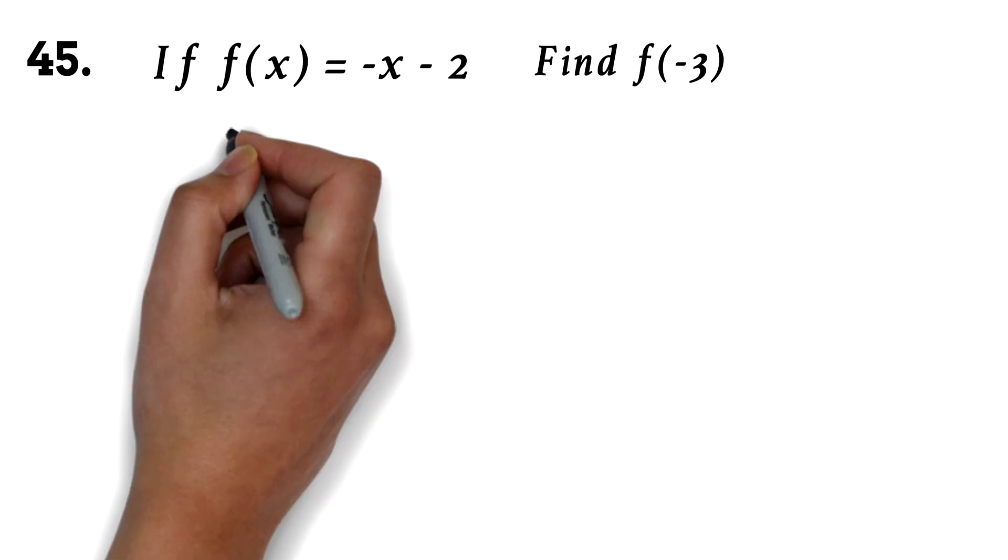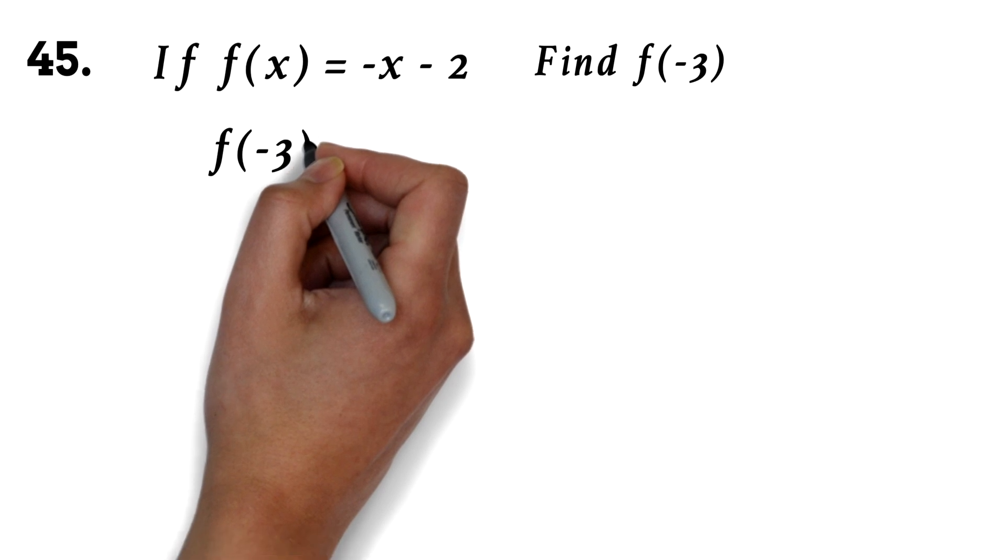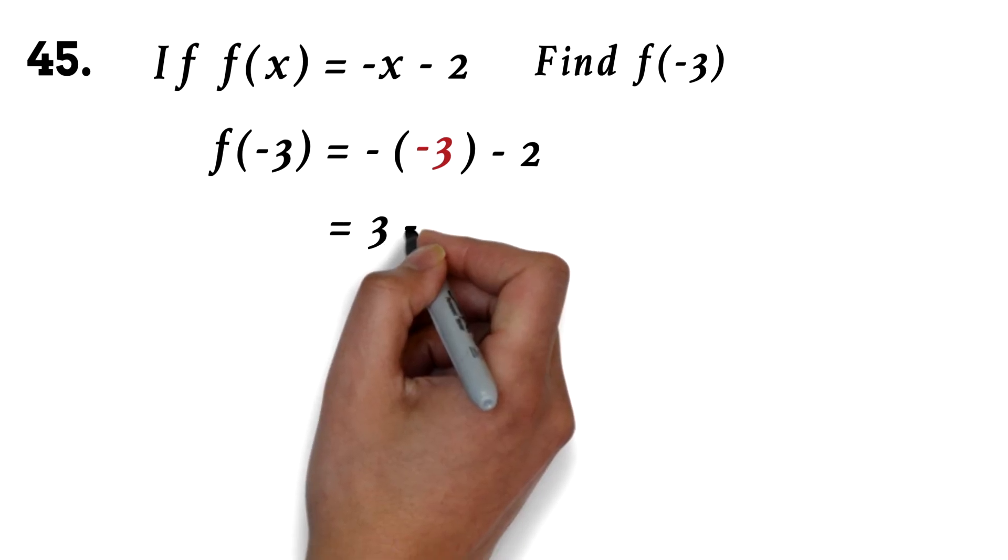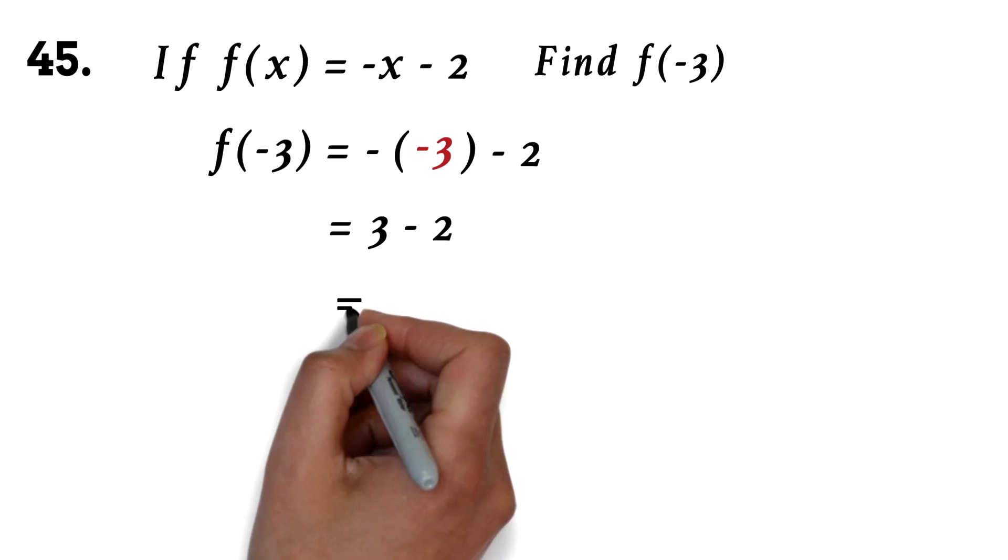Question 45. If f of x equals negative x minus 2, find f of negative 3. Here, we are just going to replace the x with negative 3 and solve. Please be careful when working with negatives. We have negative negative 3 minus 2. The negative negative 3 will become positive 3. So we have 3 minus 2, which is simply 1.